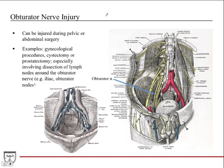Obturator nerve injury — this is very high yield for a board exam. It can be injured during pelvic or abdominal surgery because the obturator nerve starts in the abdomen, travels through the pelvis, and then into the thigh. Typical examples: hysterectomy for uterine cancer, cystectomy for bladder cancer, prostatectomy for prostate cancer — especially when it involves dissection of lymph nodes around the obturator nerve.